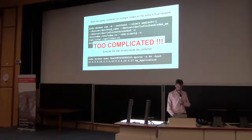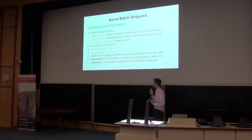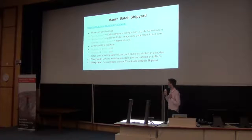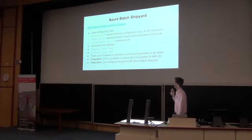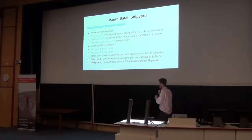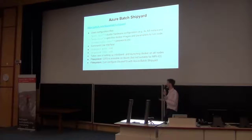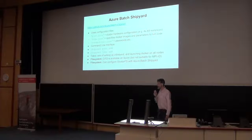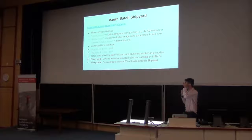Microsoft kind of realized there was a bit of a problem here, and they actually have a project called Azure Shipyard, which is quite nice. It's perhaps not set up exactly for MPI jobs, although it does support them. You basically define your cluster in a JSON configuration file — you say you want, say, four VM instances — then define your jobs in another file and your credentials in a third file. Then instead of all that gobbledygook, you just say something like 'shipyard cluster add' to boot up the cluster, or 'shipyard jobs add' to launch the jobs. It takes care of all those nasty Docker commands, launching everything, and it also has support for shared file systems.